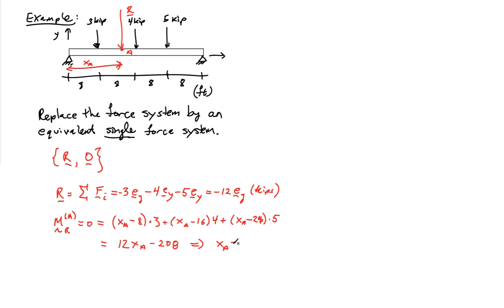That tells me that XA is equal to 17.3 kips. So I can replace my original force system on my beam by a single force, which is located just past the midline. This force has a value of 12 kips, and it's located at a distance of.